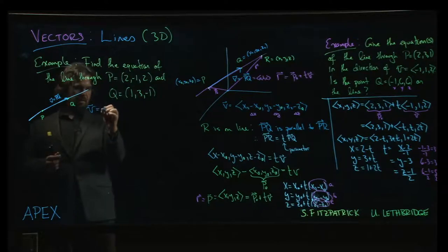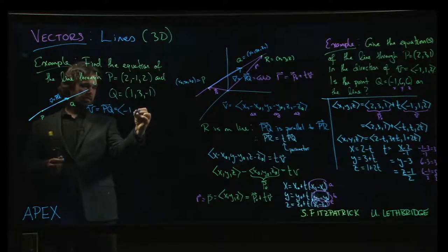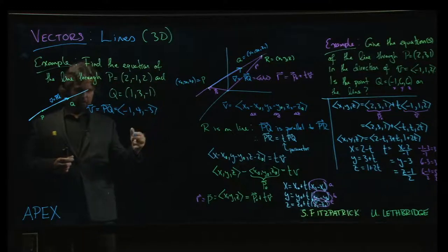So v, vector PQ, whenever we do head minus tail, so we do 1 minus 2 is minus 1, 3 subtract minus 1 is 4, and 1 minus 2 is minus 3.